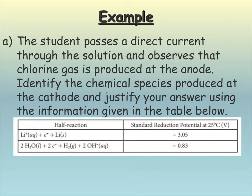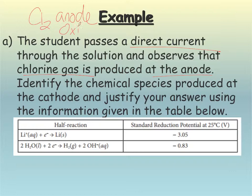Okay. Last but not least, we have a student that's passing a direct current. So this is electrolytic cell. He observes that chlorine gas is produced at the anode. Okay. So I like to immediately make notes. Okay. Chlorine gas at the anode. And I also know that the anode is where oxidation is occurring.